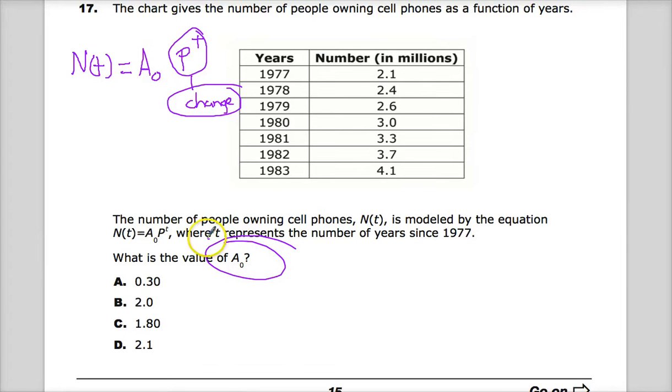Also, this value represents what the value - it says since 1977, so the first term, the first year would be 1978. So T of 1 is equal to 1978. And that'll come into play here in just a second.